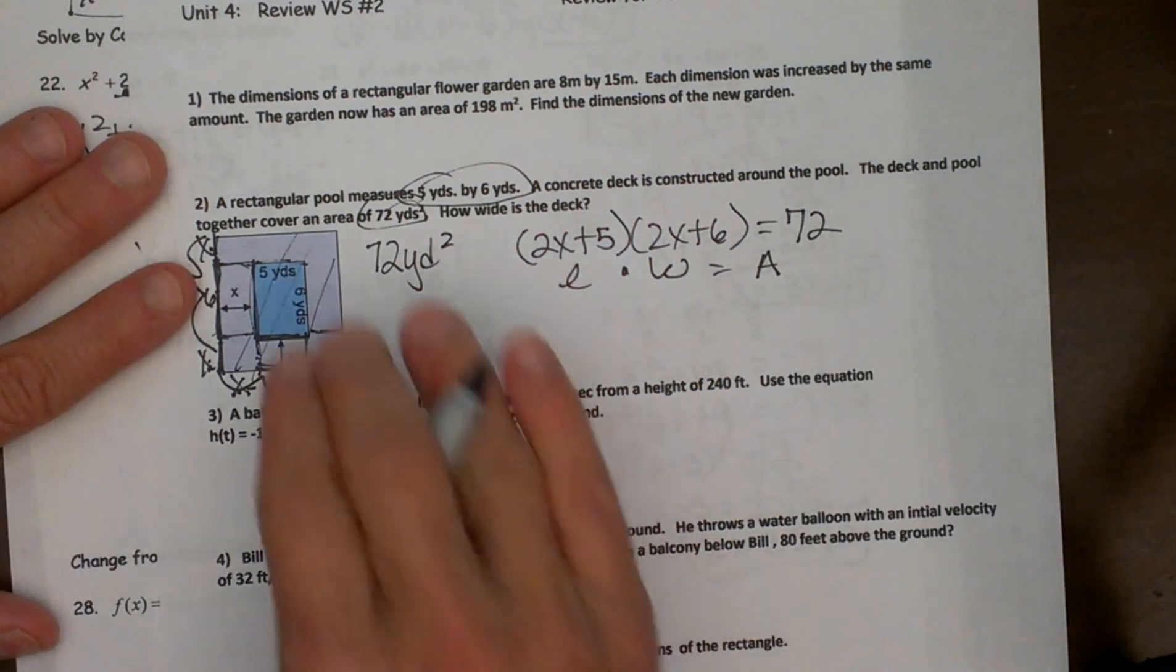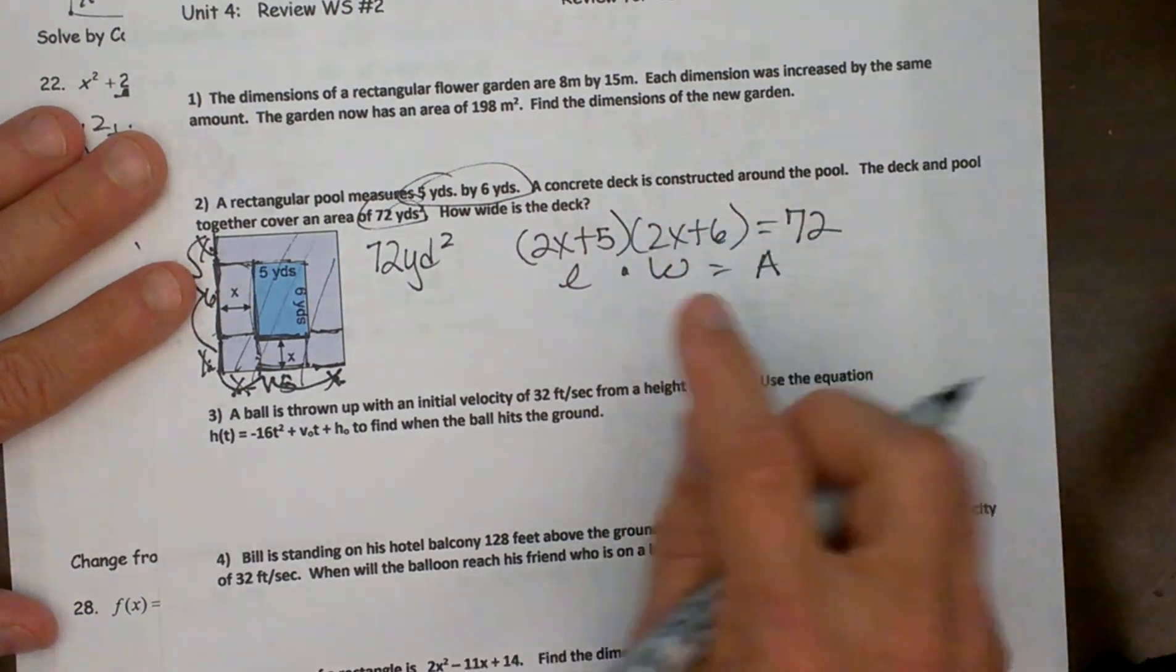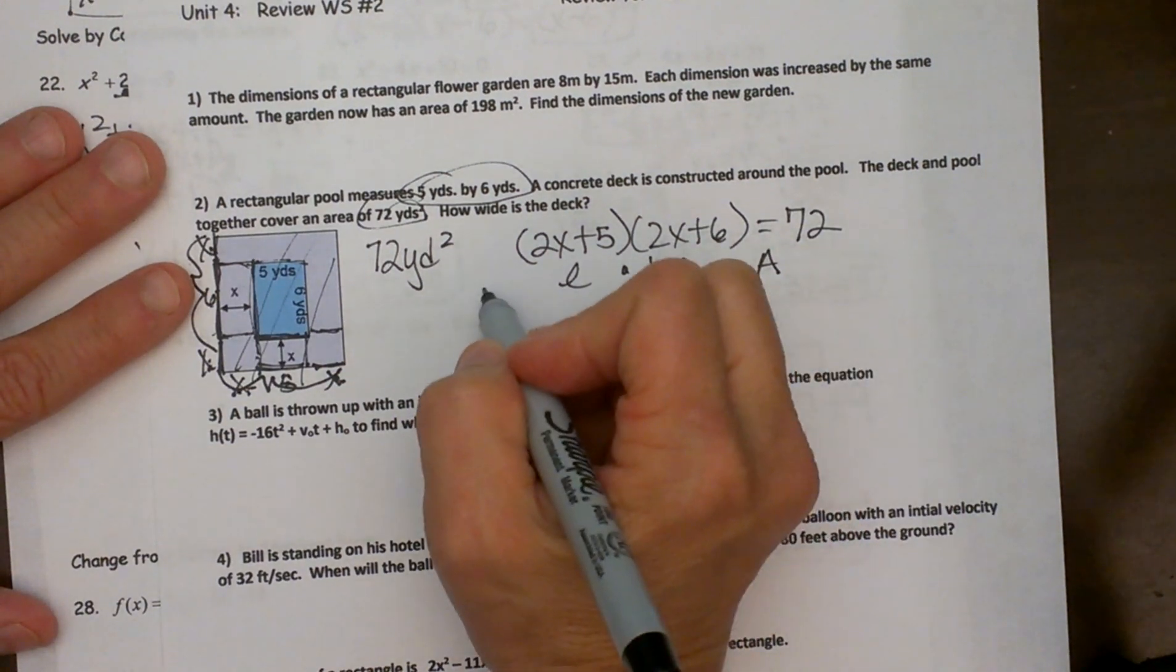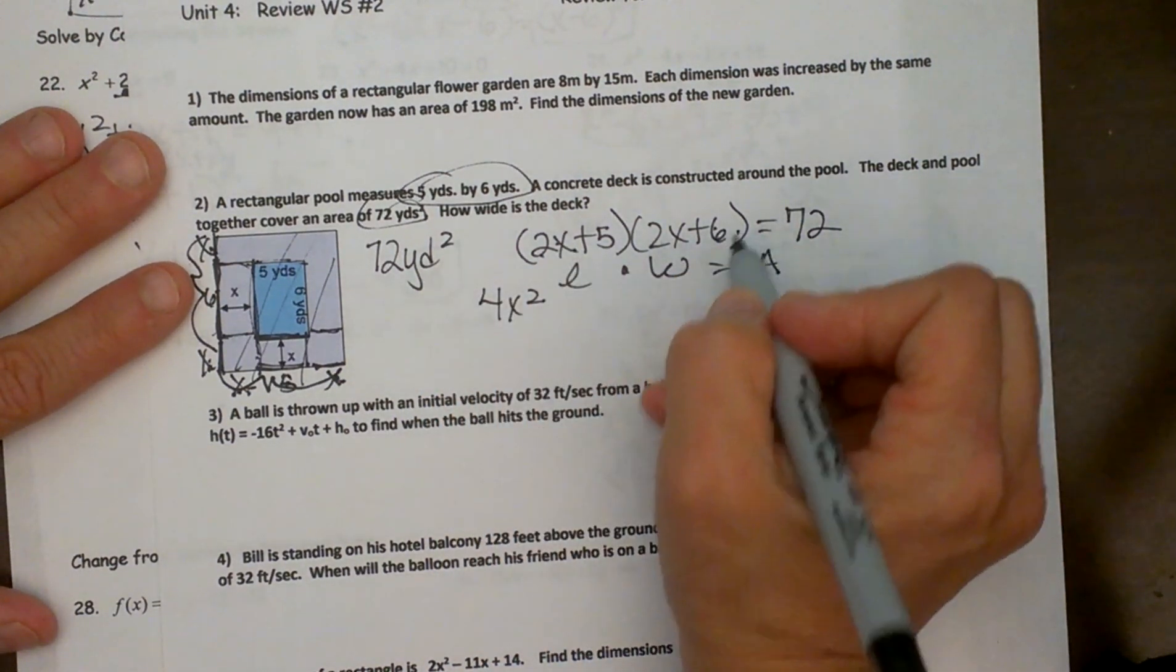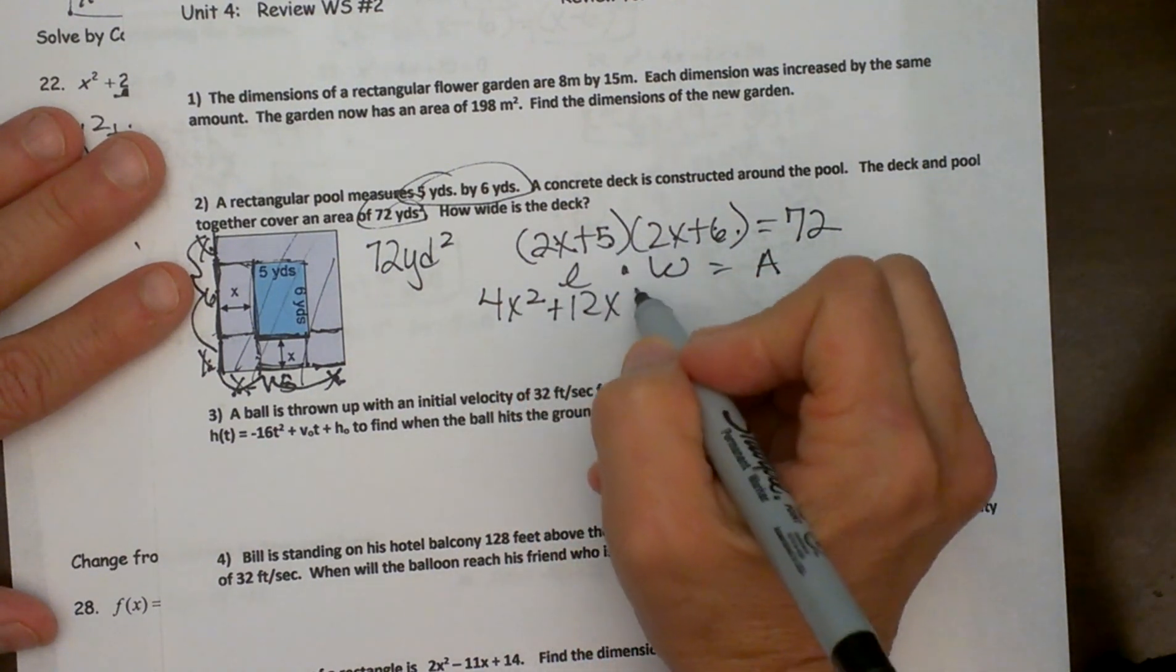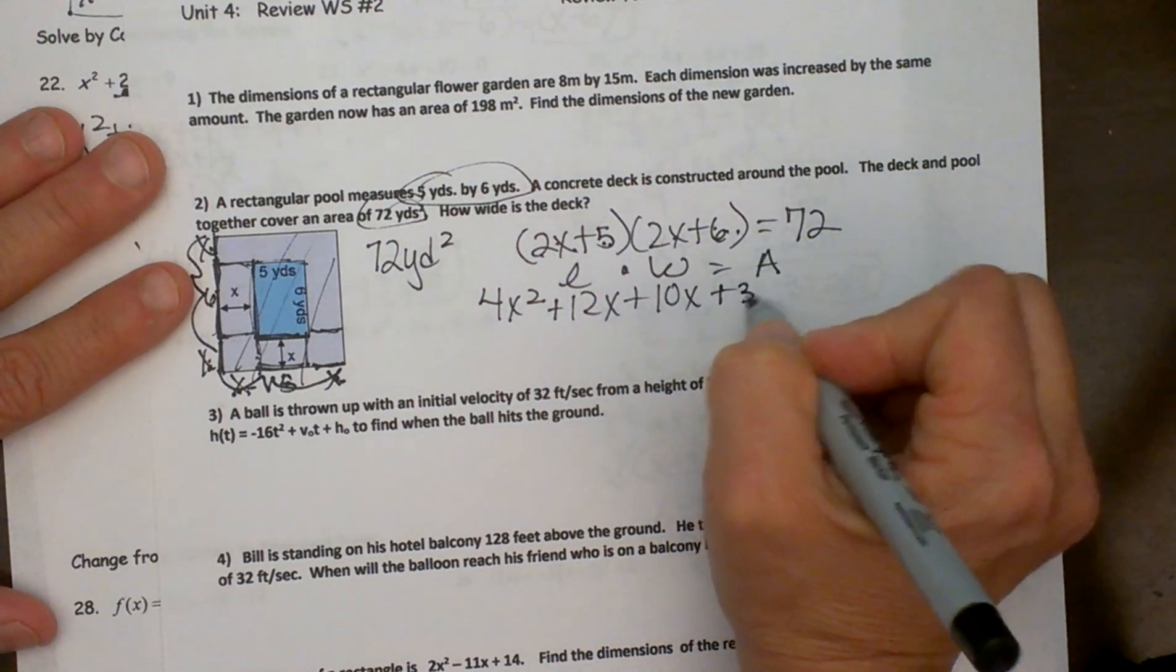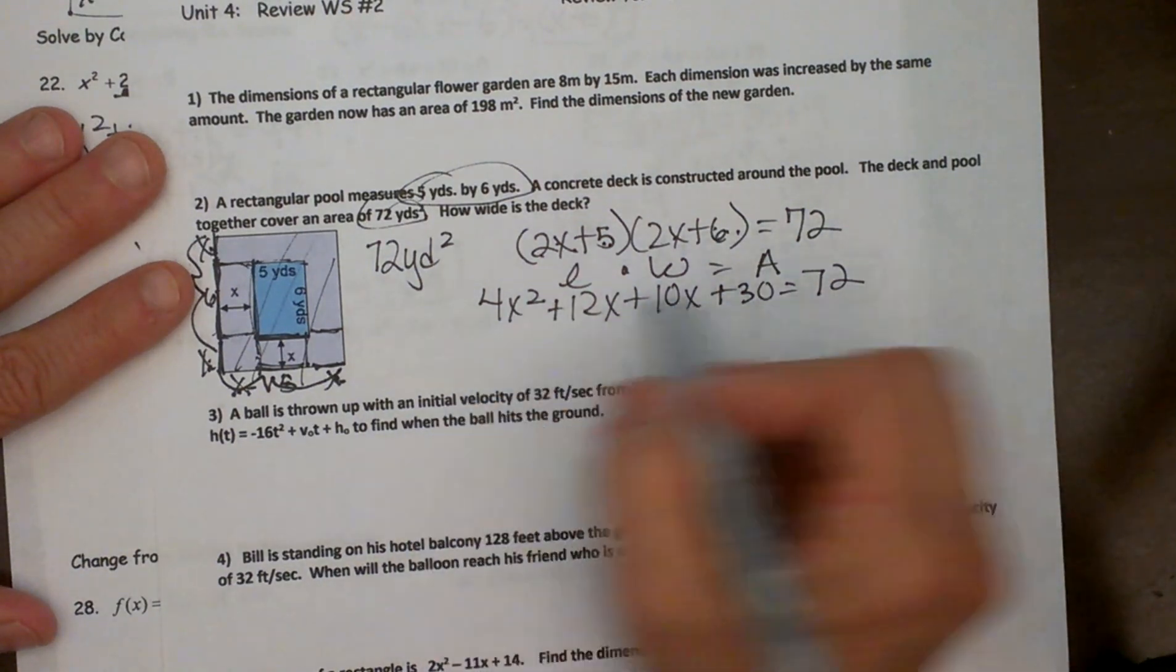Now we stop with the geometry concepts and we start working on our algebra skills. So let's FOIL this out. Okay, two x times two x is four x squared. Outer two x times six is twelve x. Inner five times two x is ten x. And five times six is thirty.